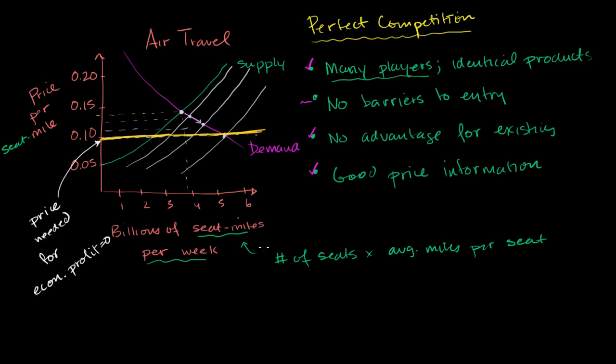Now, this was assuming perfect competition. Many players, identical products. We did it for air travel. No barriers to entry. Let's think about what happens if we have the exact opposite of perfect competition. So we're going to start at the same point. We're going to start there. So we're going to start at that green supply curve. And we have this red demand, this orange demand curve.